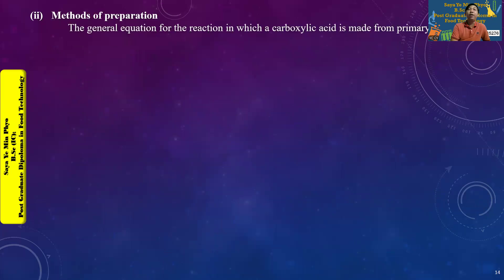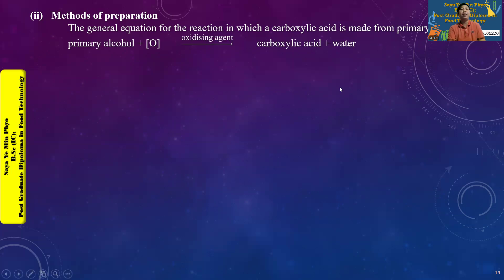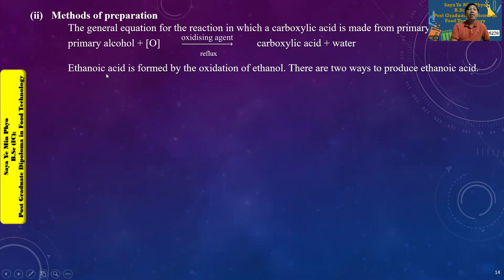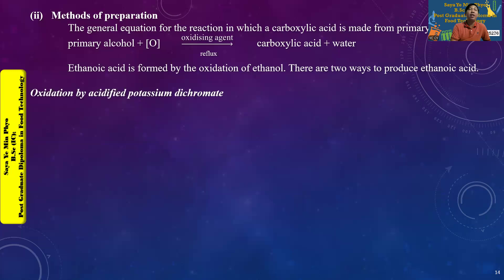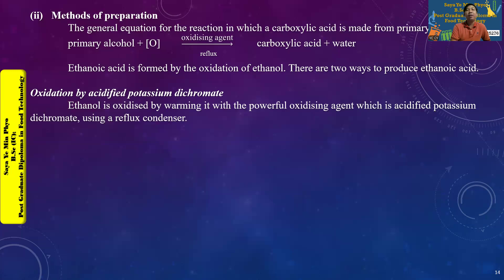The general equation for the reaction in which carboxylic acid is made from primary alcohol is: primary alcohol plus an oxidizing agent gives carboxylic acid plus water. The acid is formed by the oxidation of ethanol, and there are two ways to produce ethanoic acid.